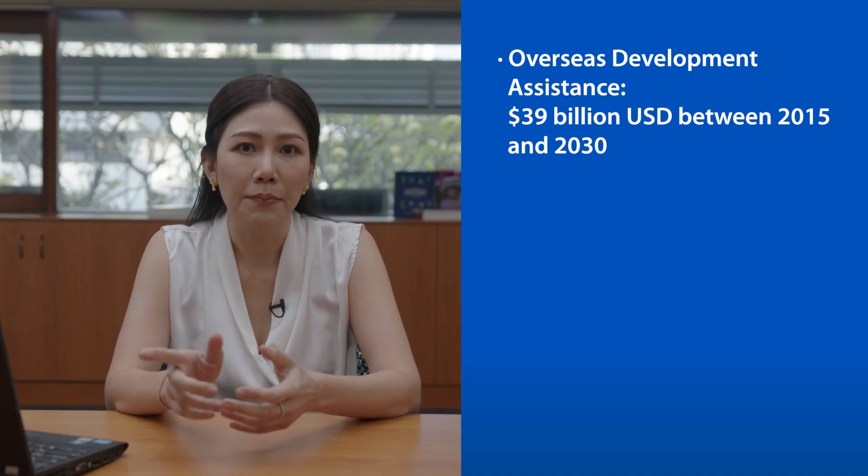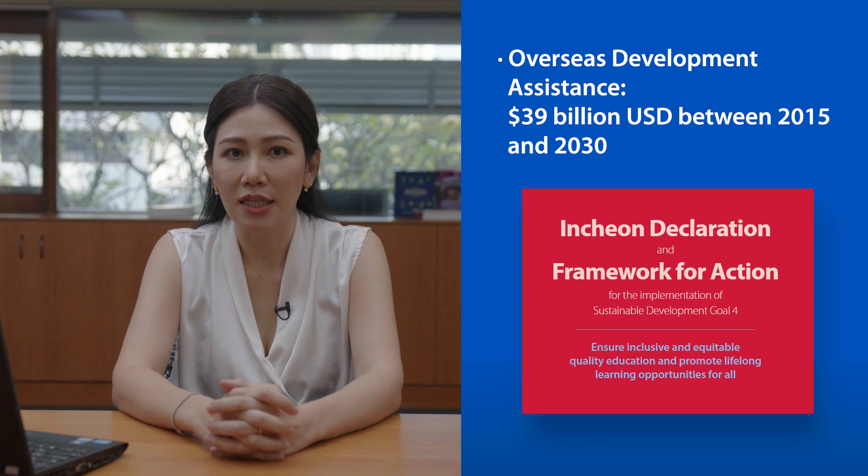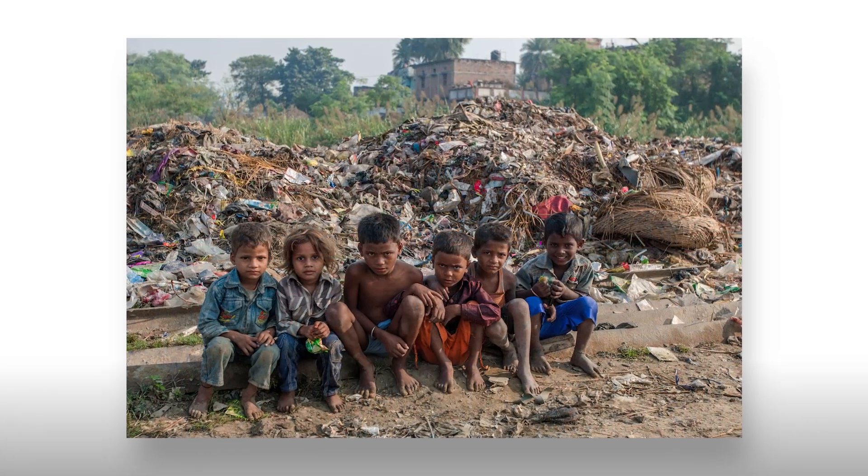External Financing. We also have external resources of funding, meaning that they come from outside of the country. This includes international aid, which can help address the financing gap between national spending and those required to reach international targets. Most international aid comes as part of overseas development assistance from countries and is projected to average about $39 billion between 2015 and 2030. The Incheon Declaration recognized the main challenges that needed to be addressed, including the need to improve equity of external financing, especially for neglected subsectors, low-income countries, vulnerable and disadvantaged groups, and conflict areas.